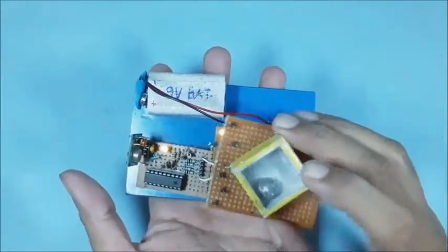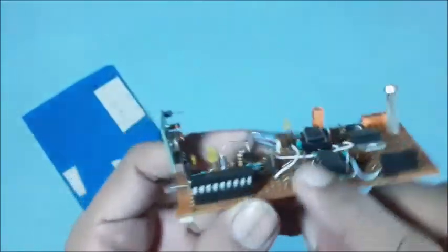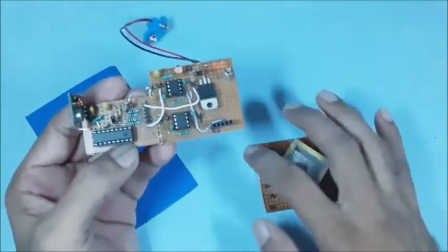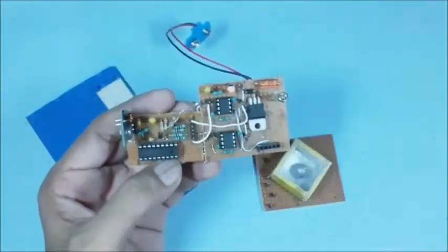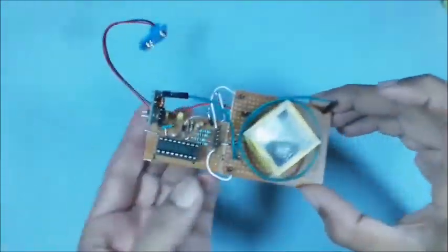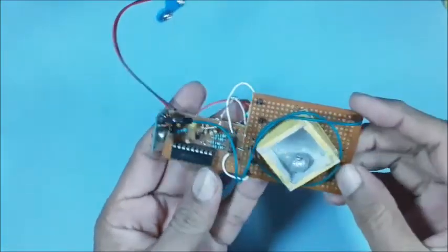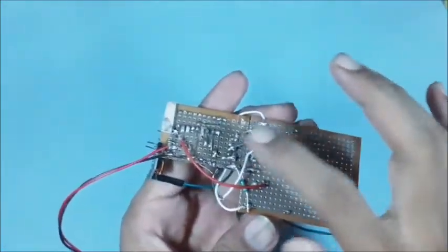Now connect the sensor to the transmitter board. Here we are using the earlier encoder and wireless transmitter system. After disconnecting previous sensor system, the new hand gesture sensor is connected as shown in the circuit diagram.